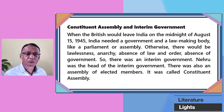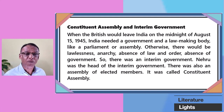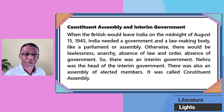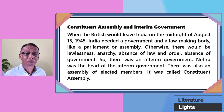Now, a brief note on the Constituent Assembly and the interim government — the temporary government when India was becoming independent. When the British would leave India on the midnight of the 15th of August, India needed a government and a law-making body like our parliament or assembly. Otherwise, there would be absence of law and order and absence of government. So there was an interim government, a temporary government, to look after the affairs of India, and Nehru was the head of the interim government. There was also an assembly of elected members called the Constituent Assembly.